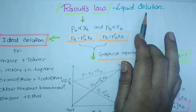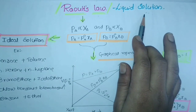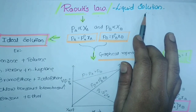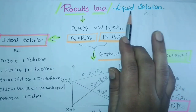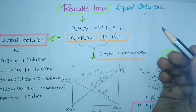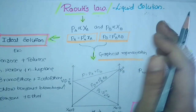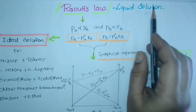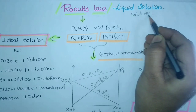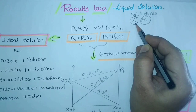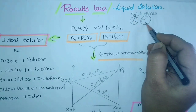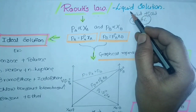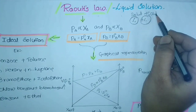A solution is a combination of a solute and a solvent. Solute is in smaller quantity and solvent in larger quantity. The solute can be solid, liquid, or gas, and similarly the solvent can be solid, liquid, or gas. Raoult's law is specially applicable for liquid solutions, where both the solvent and solute are in liquid condition. Best example: alcohol dissolved in water.